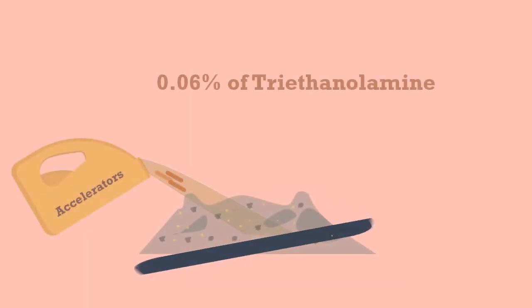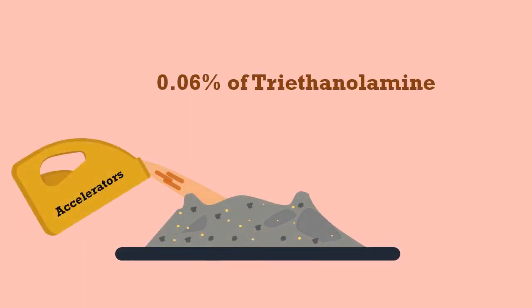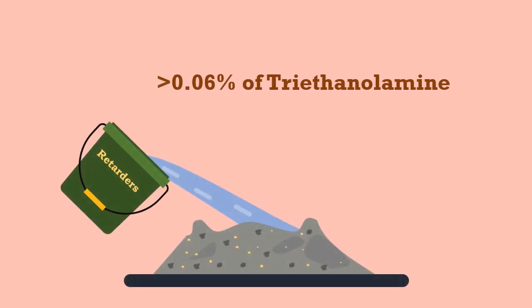Similarly, CaCl₂ when added in a proportion less than 0.06% by weight of cement acts as an accelerator, but acts as a retarder if the dosage is increased.